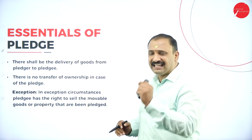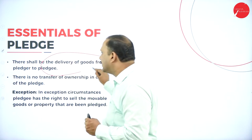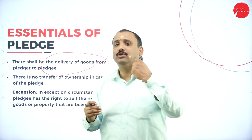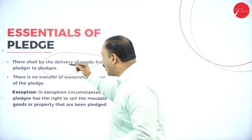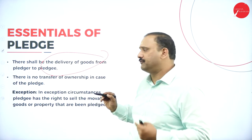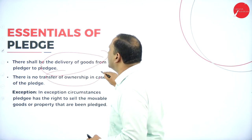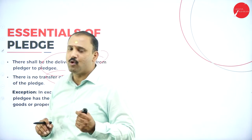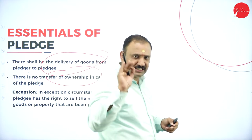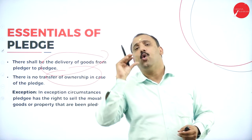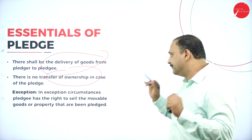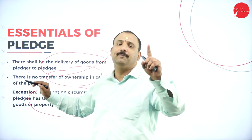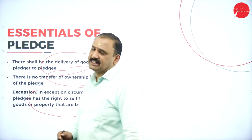There shall be delivery of goods from the pledger to the pledgee — that is the flow of goods. Importantly, there is no transfer of ownership in the case of pledge. At any point of time, the person who pledged remains the owner; the pawnee cannot take over ownership. As an exception, the pledgee has the right to sell movable goods that are pledged.